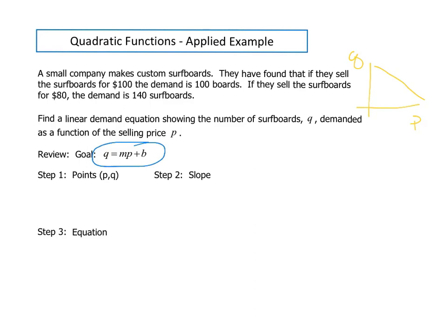The first thing we're going to do is write down what our ordered pairs are. If we read back through our information in our problem, we can see we're given two data points. If the price is $100, the demand for surfboards is 100, and with our second data point, if the price is $80, our demand is 140 surfboards.